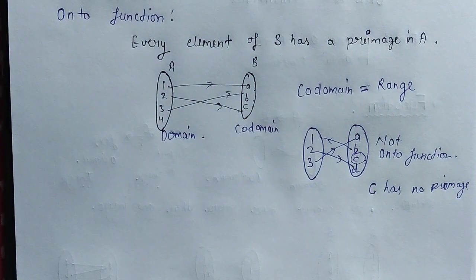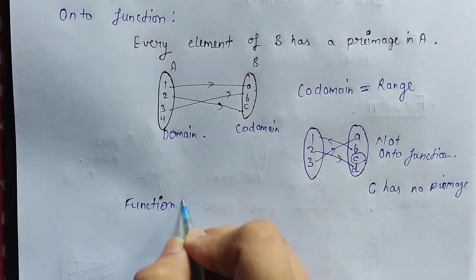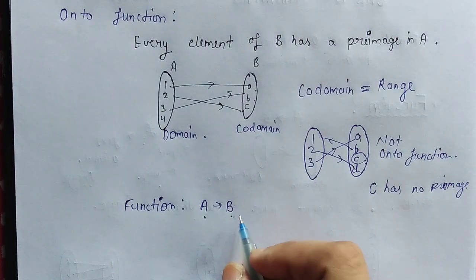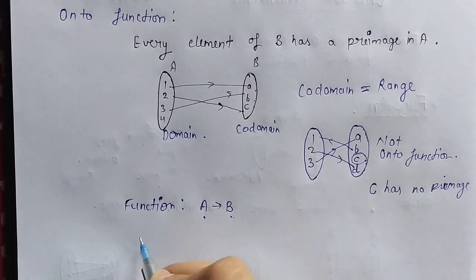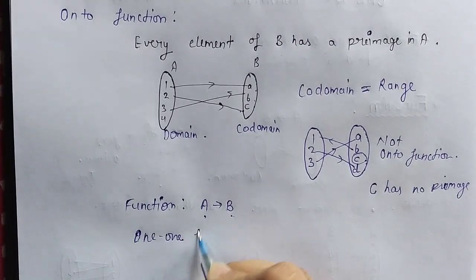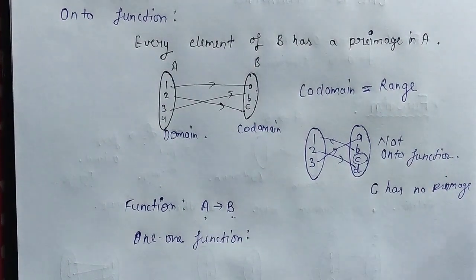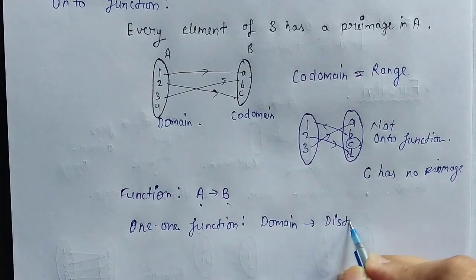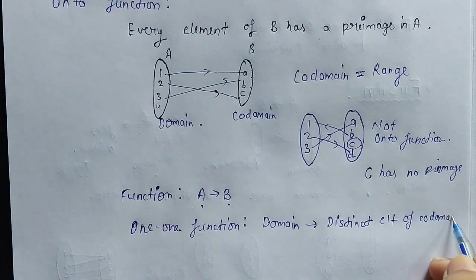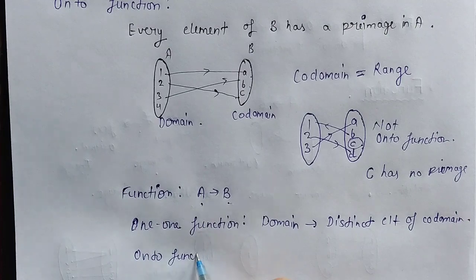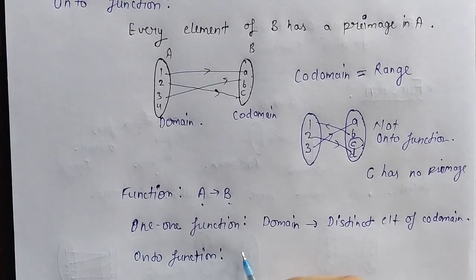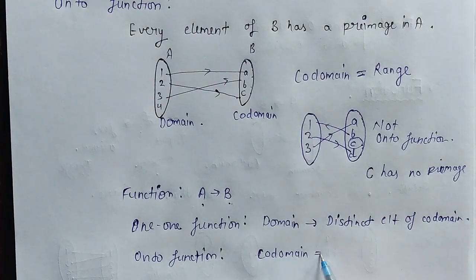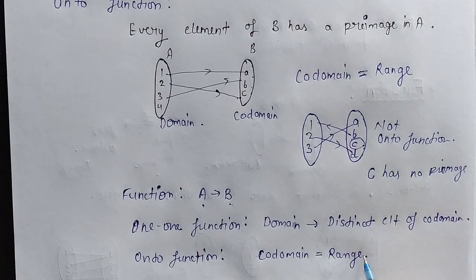I hope it is clear to you. To summarize: a function is a special kind of relation where each element of A maps to B and has a unique image in B, and no more than one image in B. A one-to-one function is where each distinct element of the domain maps to a distinct element of the co-domain. An onto function is where each element of B has a pre-image in A, and the co-domain equals the range. If you have any doubts, you can comment. Thank you for watching the video.